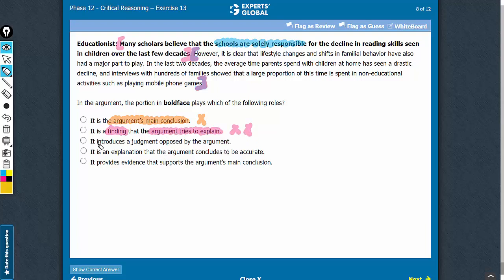Look at answer choice C. It introduces a judgment. Yes, as I said, this is an opinion, a judgment. So a good term here in judgment. Opposed by the argument. Yes, that is what we have been looking for, that the first boldface has been opposed by the argument. C is likely the correct answer choice.